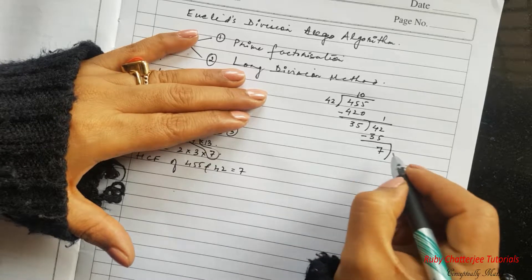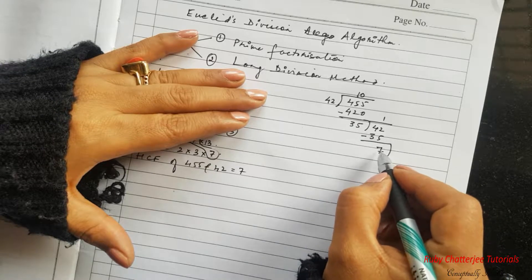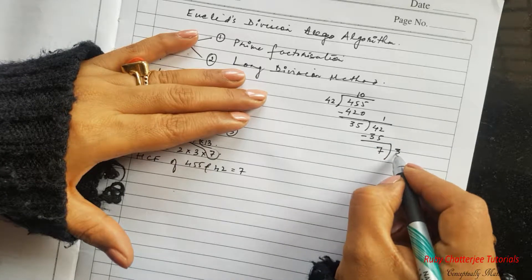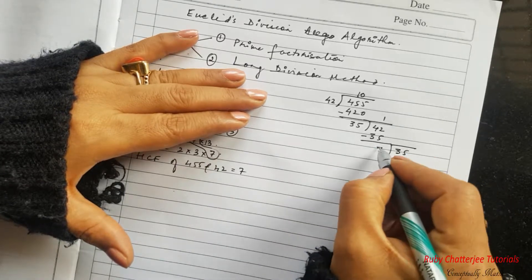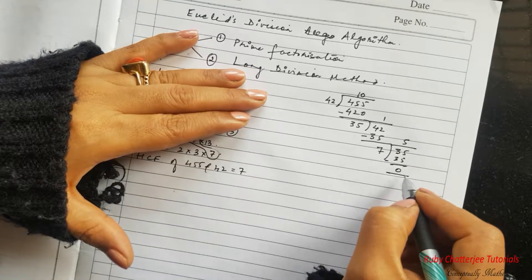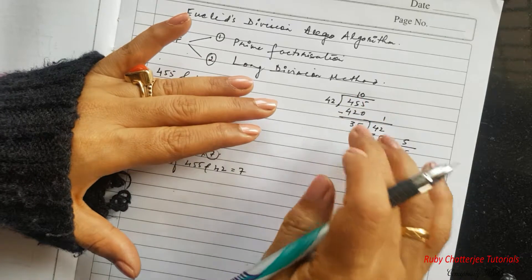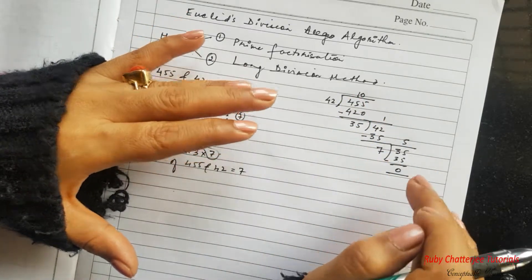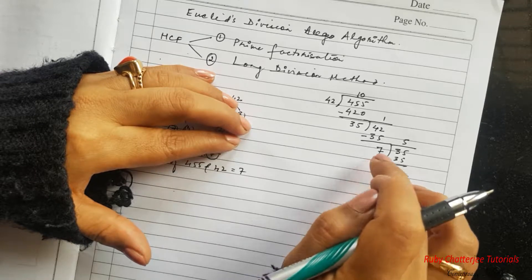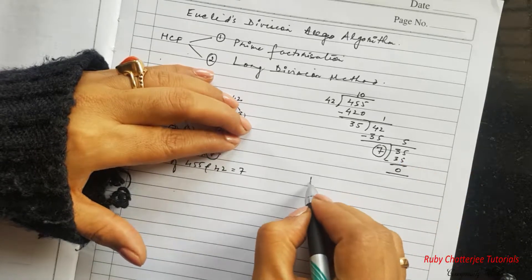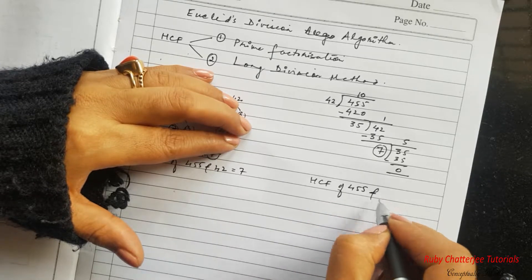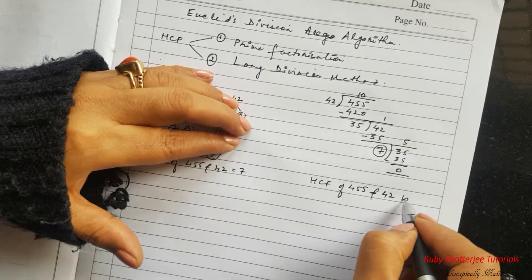So now for the next step 7 becomes the divisor and the previous divisor becomes the dividend in this step. So 7 fives are 35 and then we get the remainder to be 0. So now we can no further divide it and at this stage when the remainder becomes 0, the divisor is 7. So HCF of 455 and 42 is 7.